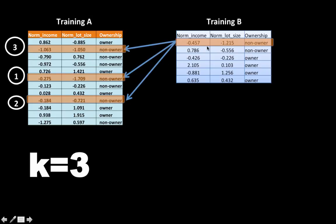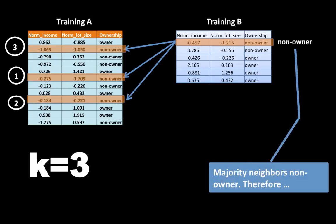Using the x-y coordinates and the Pythagorean formula, we calculate the distance to all cases in Training A and find the three closest neighbors, because k is 3. All three neighbors are non-owners, so by majority vote we predict this person will be a non-owner. This makes sense — looking at the standardized values, this person is below average in both income and lot size, so it's unlikely they would want a riding mower.